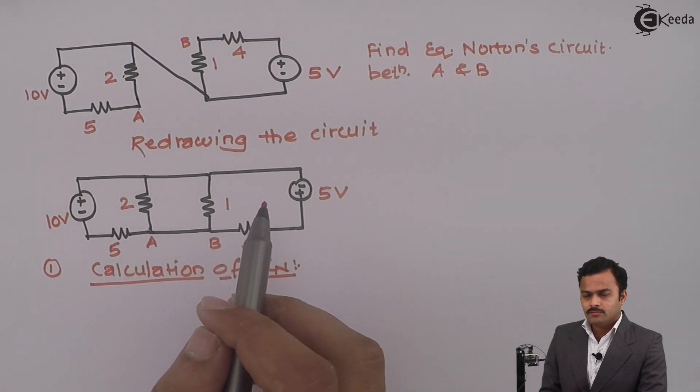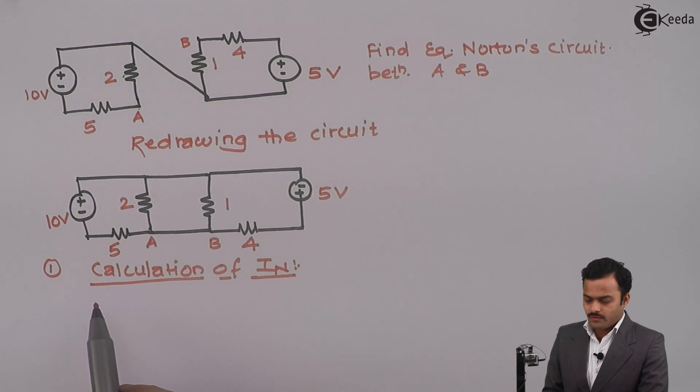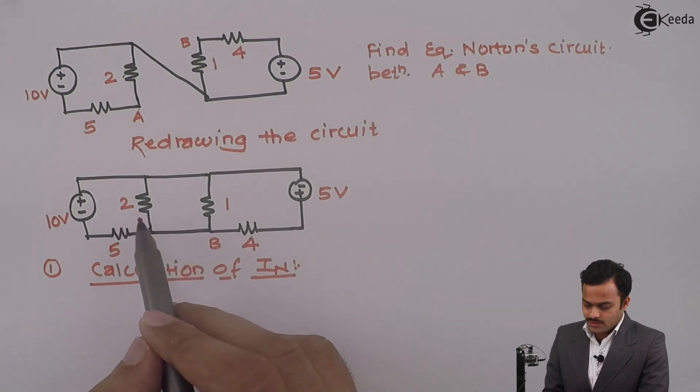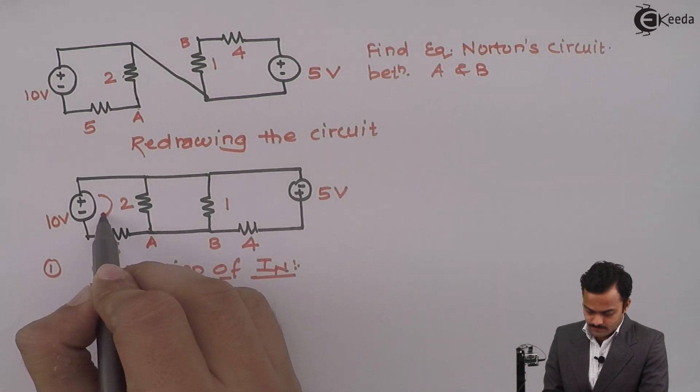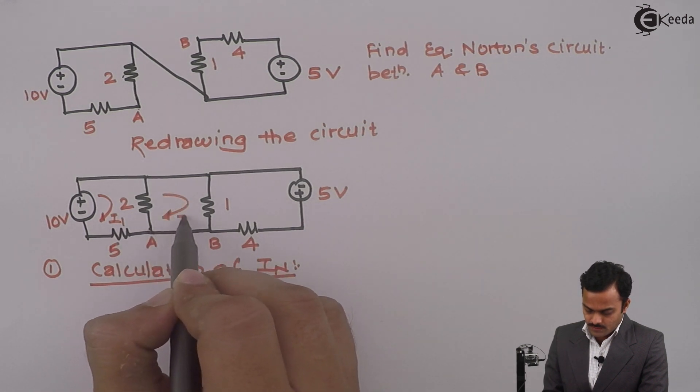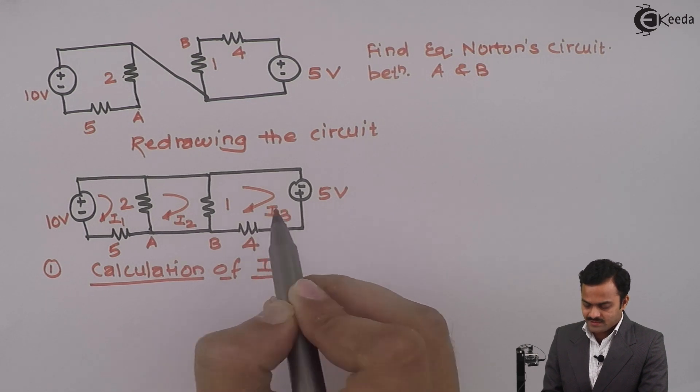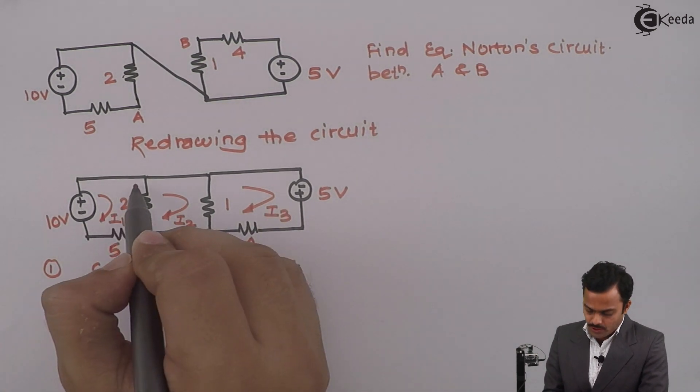For this purpose I will use mesh analysis because mesh analysis is the simplest technique while solving Norton's theorem. Right now there are three loops, so three currents: I1, I2, and I3. As per the direction of current, I will get voltage drops.